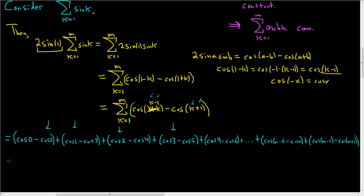Now we carefully look for the cancellation pattern. cos(0) = 1 and there are no other cos(0) terms, so that stays. cos(2) cancels with the cos(2) that appears two terms later. cos(1) does not go away. Each term cancels with the matching term two positions ahead of it. So all the middle terms cancel.